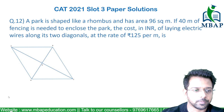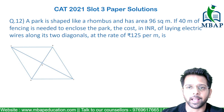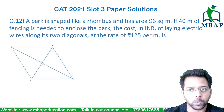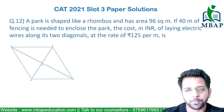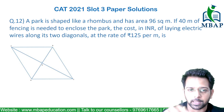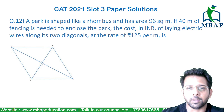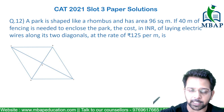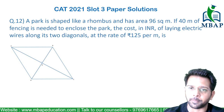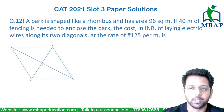Let's look at the next question. A park is shaped like a rhombus and the area is given as 96. The area of a rhombus is half into d1 into d2, the two diagonals. If 40 meters is the fencing needed to enclose the park, the perimeter of the rhombus is 40. The cost of laying electric wires along the two diagonals has to be found, given the rate is 125 per meter.